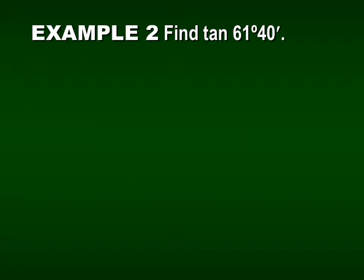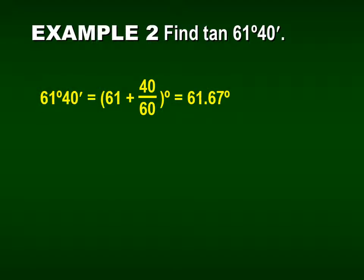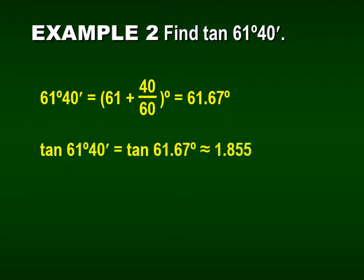Let's find tangent of 61 degrees, 40 minutes. This is not a special angle, so we'll use our TI-83 graphing calculator. But we can't just enter 61.40 — it's not saying 61.4, it's saying 61 degrees and 40 minutes. We have to convert 40 minutes to a decimal by dividing by 60, since there are 60 minutes in a degree. So 61 plus 40 divided by 60 equals 61.67. Tangent of 61 degrees 40 minutes equals tangent of 61.67, which gives us 1.855 in degree mode.